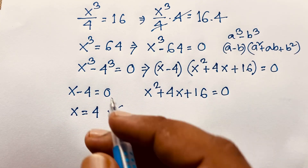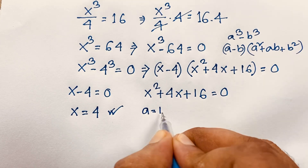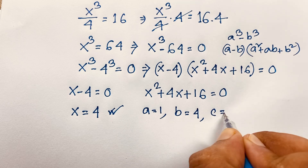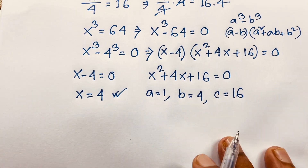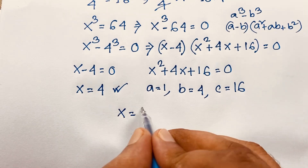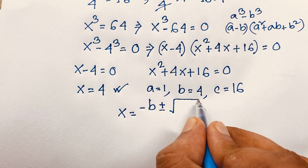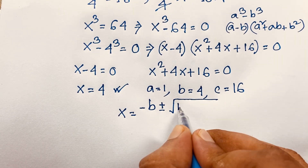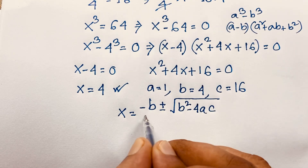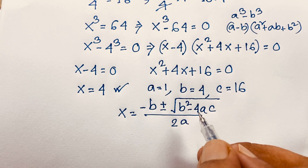For the quadratic equation, we identify a equals 1, b equals 4, and c equals 16. We apply the quadratic formula: x equals minus b plus or minus square root of b squared minus 4ac, all over 2a. This is a nice quadratic equation.